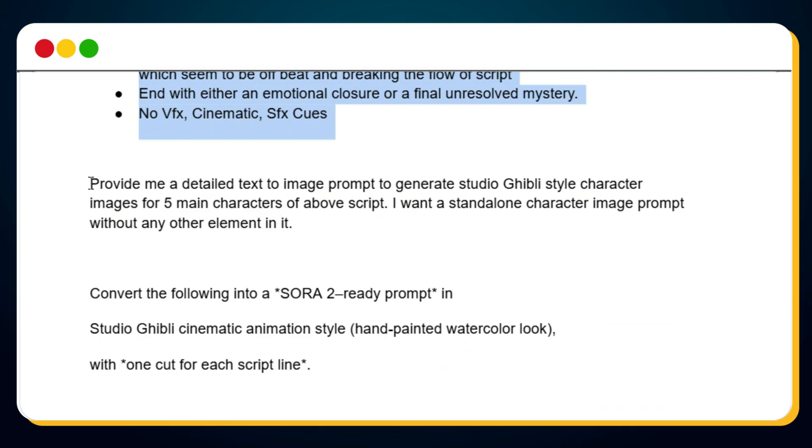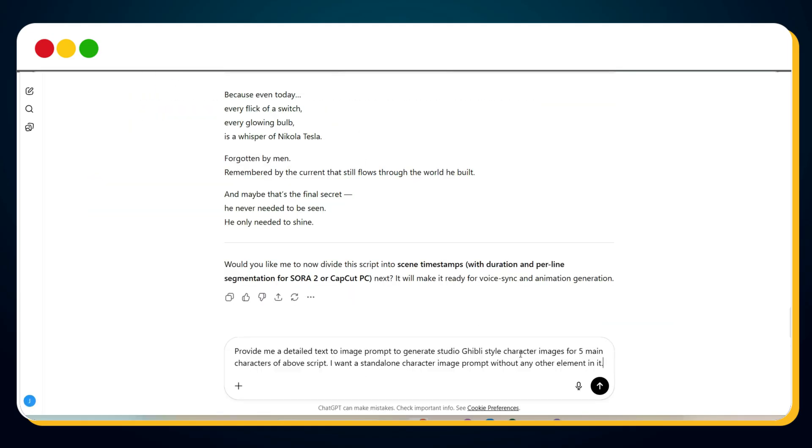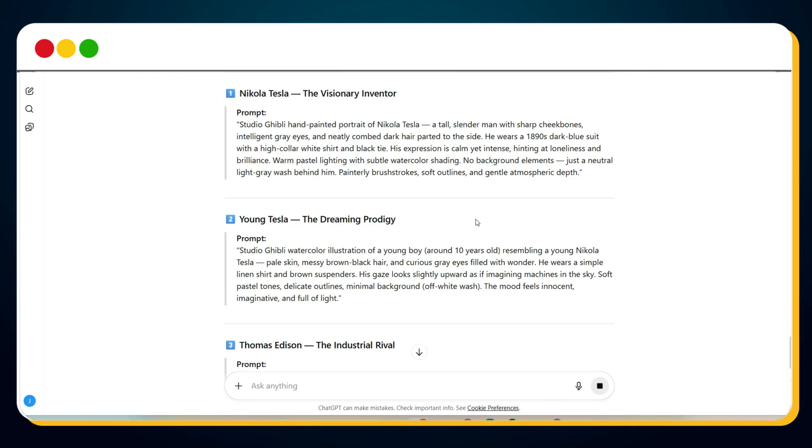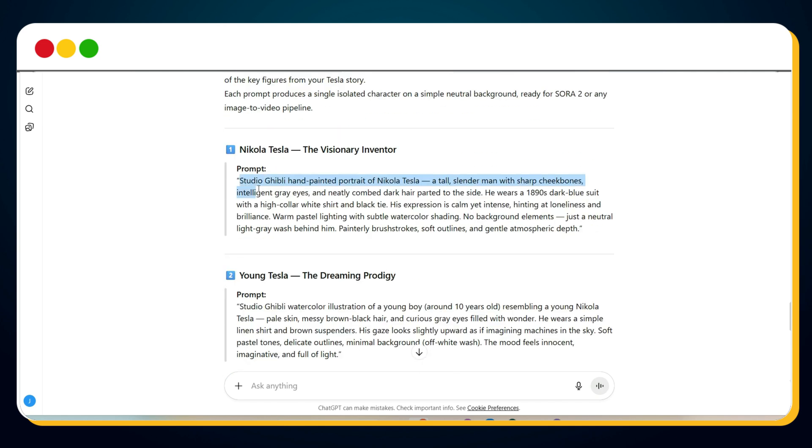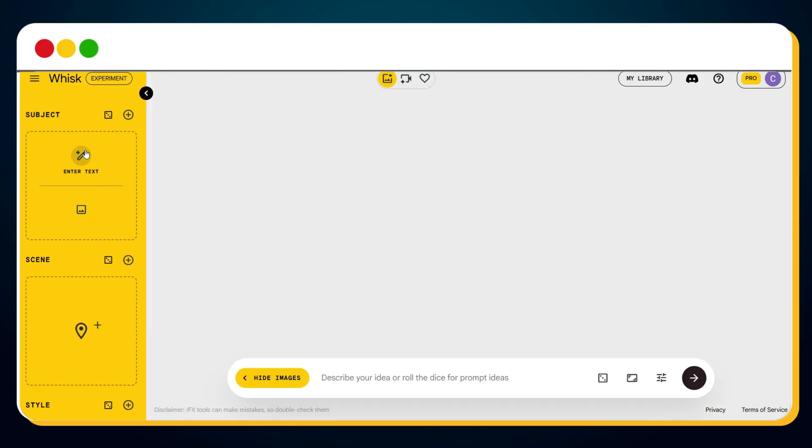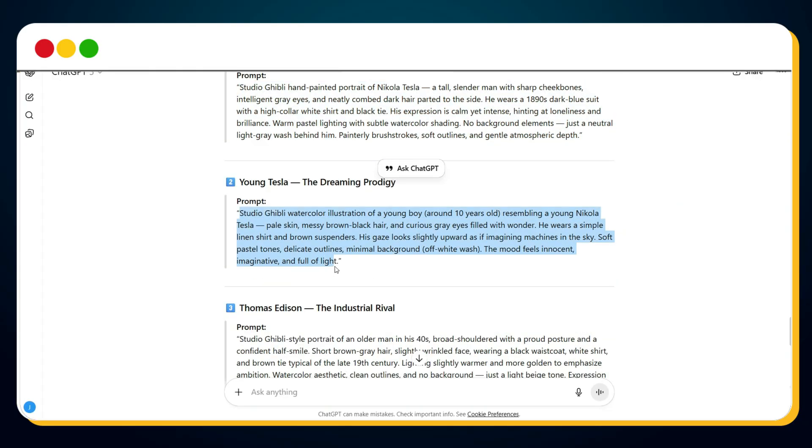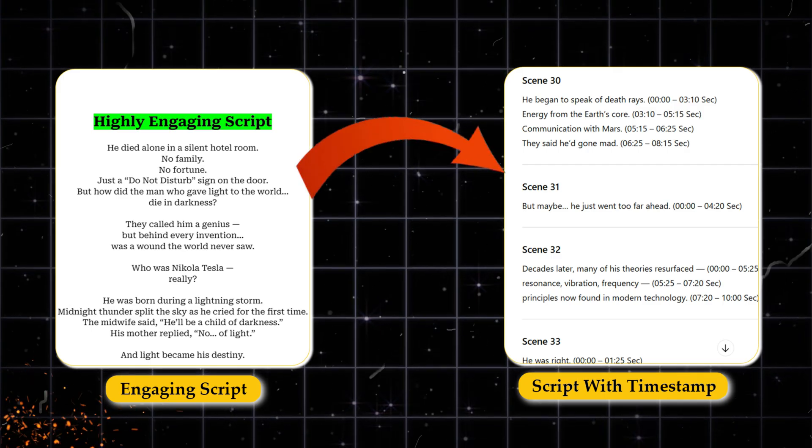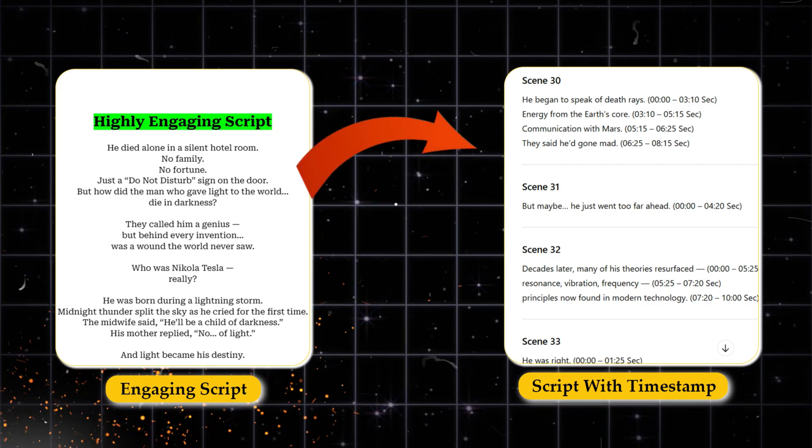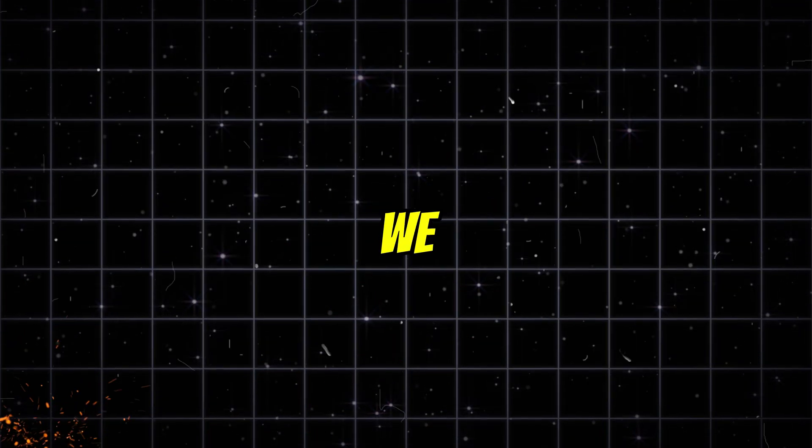Now, let's generate a detailed character prompt for our script. Once done, copy these prompts into Google Whisk. And within seconds, you'll generate perfectly consistent characters across every scene. Now that our characters look flawless, the next step is to convert our script into cinematic scenes with timestamps.